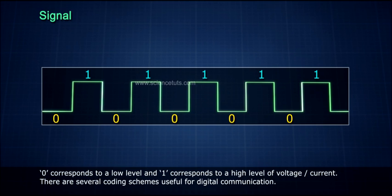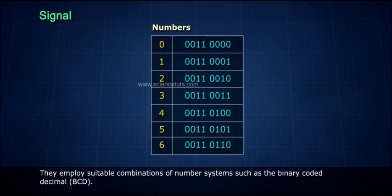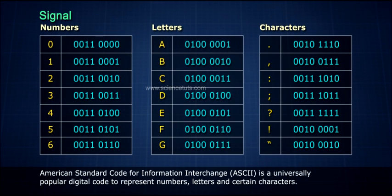There are several coding schemes useful for digital communication. They employ suitable combinations of number systems such as the binary coded decimal (BCD). American Standard Code for Information Interchange (ASCII) is a universally popular digital code to represent numbers, letters, and certain characters.